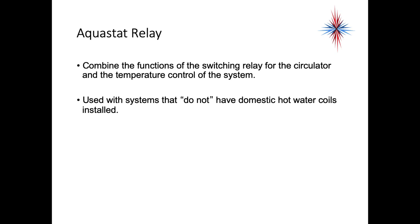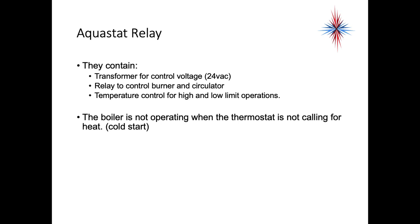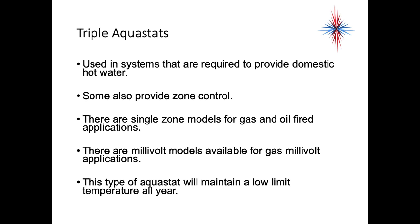Aquastat relays are used in systems that do not have domestic hot water coils installed — in other words, we do not need to maintain a higher boiler water temperature. They contain the transformer for control voltage, a relay to control the burner and circulator, and temperature control for high and low limit operations. The boiler is not operating when the thermostat is not calling for heat — it's a cold start boiler, meaning it will get cold before it starts up.